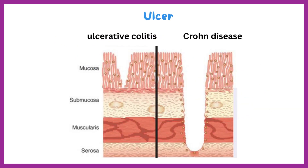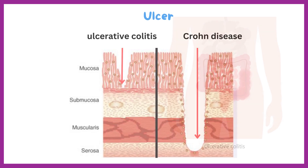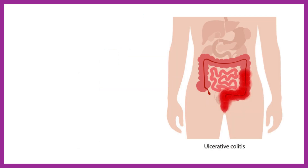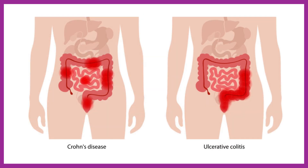Unlike ulcerative colitis, which extends through the mucosa and submucosa, the damage and inflammation in Crohn's disease extends beyond the submucosal layer and through the entire depth of the intestinal wall. Also, another distinction from ulcerative colitis is that these areas of inflammation are scattered as opposed to being continuous, with areas of healthy tissue interspersed between inflamed areas.